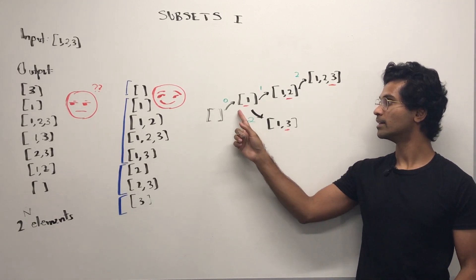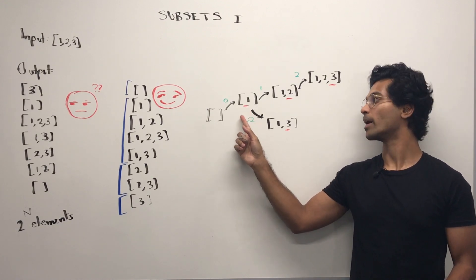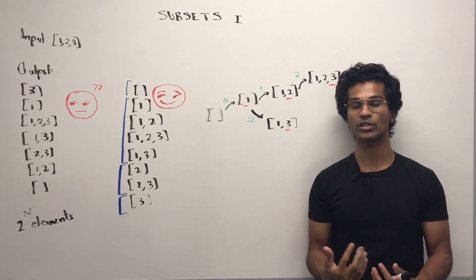So then we go back. What can I add to one? I'm finished. So now we're going to go back to the empty. Now we've exhausted the branch that begins with one.